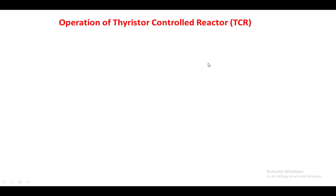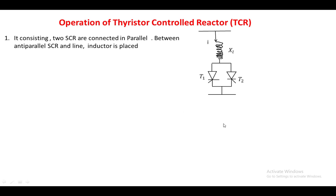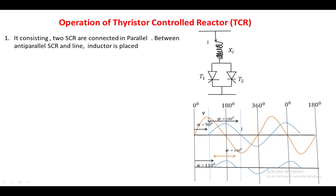For the operation of the thyristor controlled reactor: T1 and T2 are connected anti-parallel in series with a reactance, and voltage is applied across the system. Looking at the voltage waveform, during the positive half cycle T1 is forward biased. A triggering pulse is applied to T1 at a firing angle of 90 degrees, so T1 begins conducting from that point.